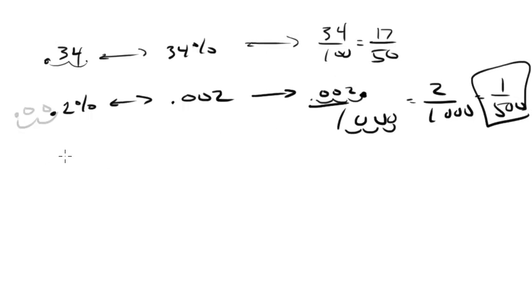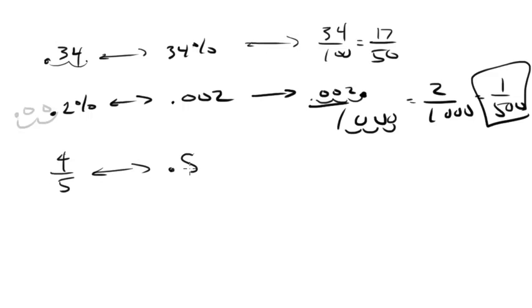Let's start with the fraction 4 out of 5. Dividing 4 by 5 gives us the decimal 0.8. To get a percent, we move the decimal point two spaces to the right and get 80%.